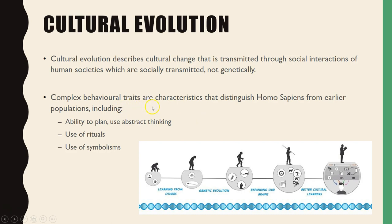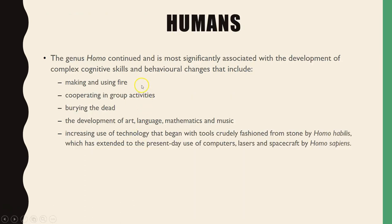As a result of humans increasing their brain volume, their ability to plan and use abstract thinking increased, so rituals and symbolism increased, and therefore cultural evolution increased as the Homo genus was biologically selected for. Being able to be more culturally evolved was a result of large development in cognitive skills, reflected in larger brain size, which enabled more cognitive skills and behavioural changes — such as making and using fire, cooperating in groups, burying the dead and having rituals, the use of art, language, mathematics and music, and increased use of tools and technology.